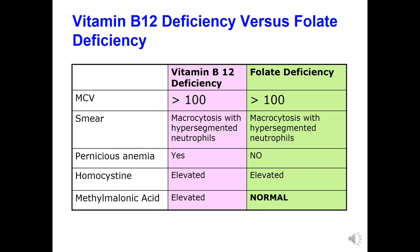Comparing vitamin B12 deficiency versus folate deficiency: in both cases, MCV is more than 100 and the peripheral blood shows macro-ovalocytes with hypersegmented neutrophils. In folate deficiency, there is no pernicious anemia and no effect on ileal absorption. Homocysteine is elevated in both cases, since both B12 and folate are needed to convert homocysteine into methionine. However, methylmalonic acid is elevated only in B12 deficiency, because vitamin B12 specifically helps isomerization of methylmalonyl-CoA to succinyl-CoA.